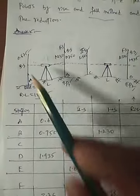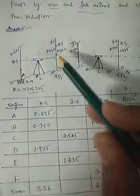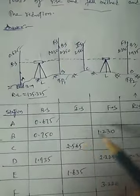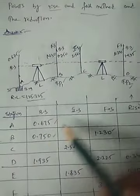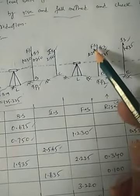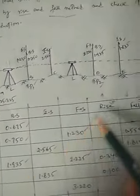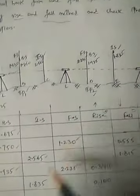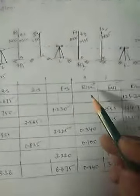Now we fill in the table. Station A: backsight is 0.675. Station B: foresight is 1.230. Station B backsight is 0.750. Station C: intermediate sight is 2.565. Station D: foresight is 2.225. Station D: backsight is 1.935. Station E: intermediate sight is 1.835. Station F: foresight is 3.200. After filling this in, we calculate rise and fall.